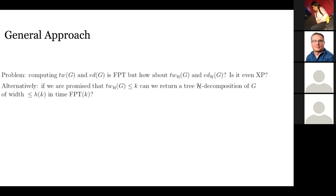We take an alternative approach: instead of computing optimal-width decompositions, we settle for approximation. When given a parameter k and promised that the graph has H-tree width at most k, we are happy to compute a tree-H decomposition of width h(k) where h is some moderately growing function. The bottleneck of this approach is to compute any decomposition to start with.